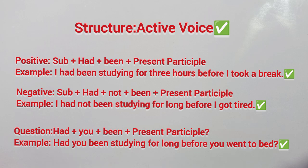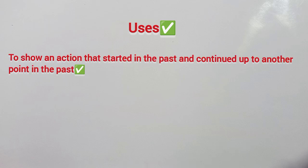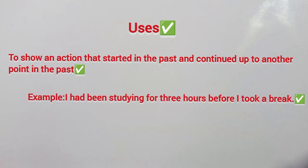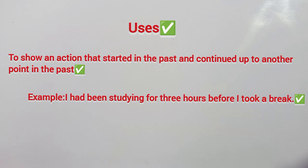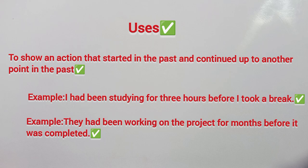So we will look at the Past Perfect Continuous Tense uses. First use: an action that started in the past and continued up to another point in the past. For example: 'I had been studying for three hours before I took a break.' Another example: 'They had been working on the project for months before it was completed.' The project went on, then it was completed.